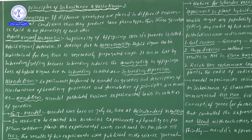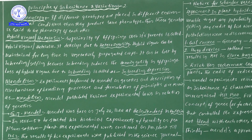Mendel postulated various experimental laws in relation to genetics — specifically, the law of dominance, law of segregation, and law of independent assortment. There are three laws related to Mendel.